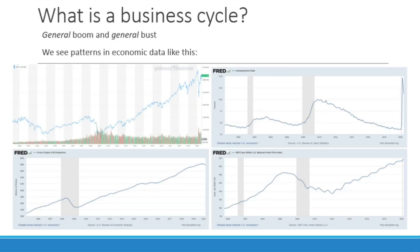A business cycle is when we see general booms and general busts — an economy-wide increase in wages, employment, and prices of capital goods, followed by an economy-wide decrease in those same things. Something happening on a broad scale. The shape of the line is what's important here. We have some stock price indices, the unemployment rate on the top right, and the Case-Shiller home price index on the bottom right — all showing this up-and-down pattern that applies to the economy in general, not to any particular sector.